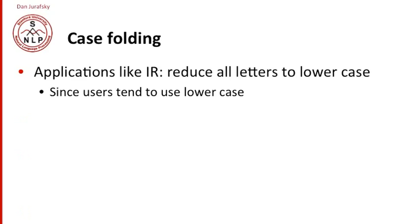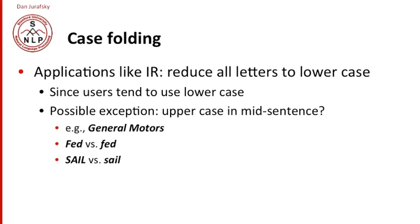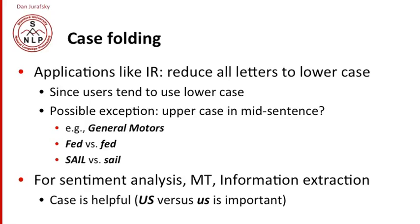In information retrieval, we generally reduce all letters to lowercase since users tend to use lowercase, with some small exceptions. For example, if we see uppercase in the middle of a sentence like 'General Motors,' we might want to keep the case. This matters for distinguishing the verb 'fed' from the Federal Reserve Bank with a capital F, or a group like SAIL — the Stanford Artificial Intelligence Lab — from the verb 'sail.' For sentiment analysis, machine translation, or information extraction, case is in fact very helpful. There's a big difference between 'us' and 'US.'